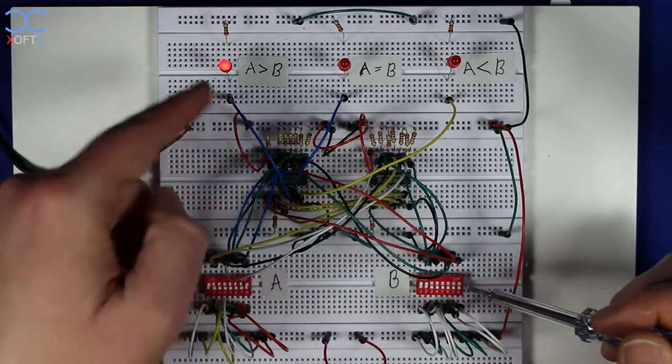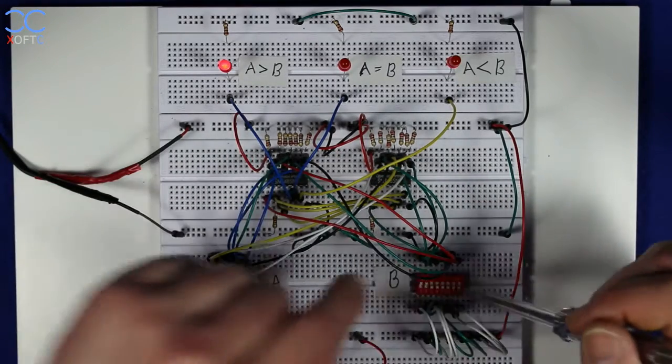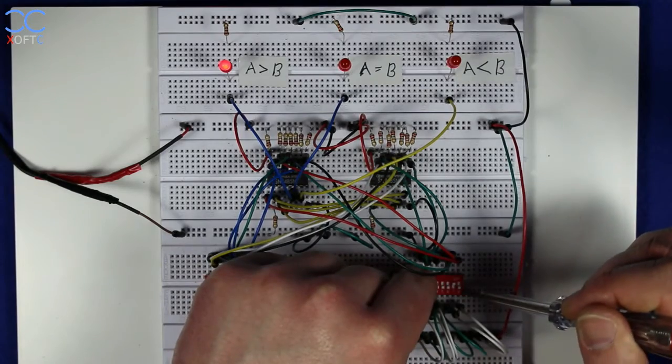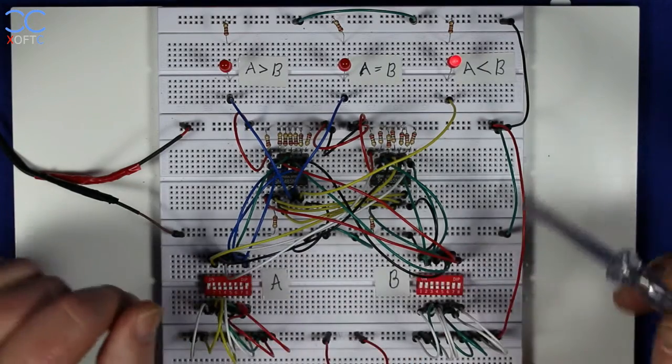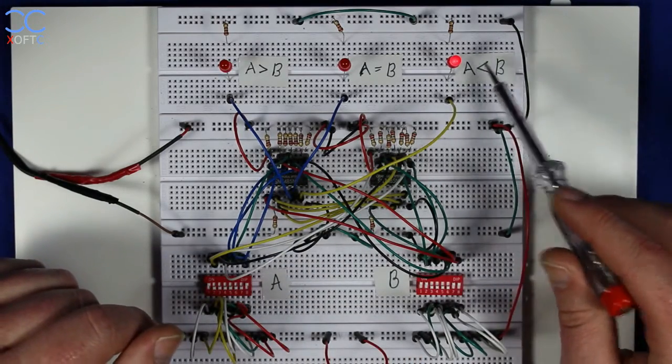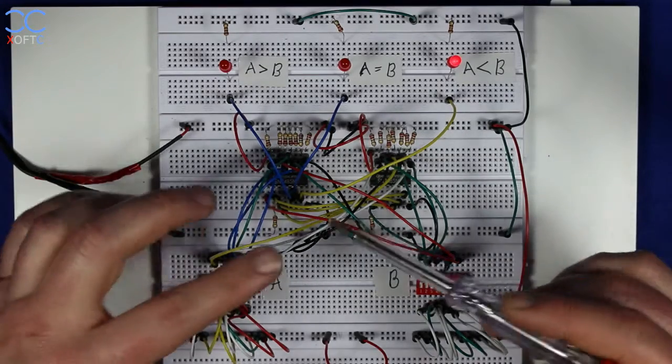So again, A is larger than B, and if I set this to high, then A is smaller than B, and that's how you work with it.